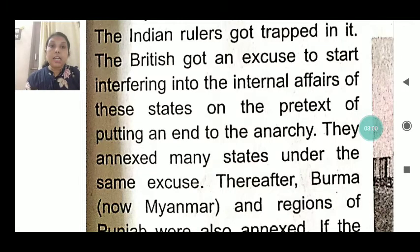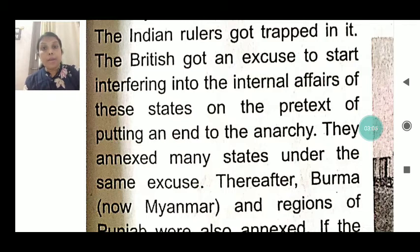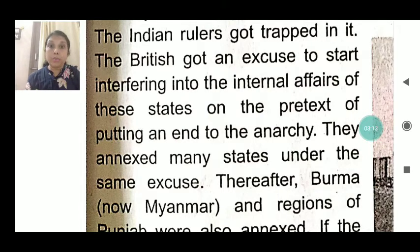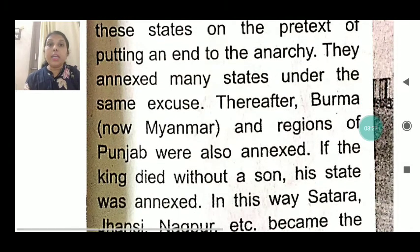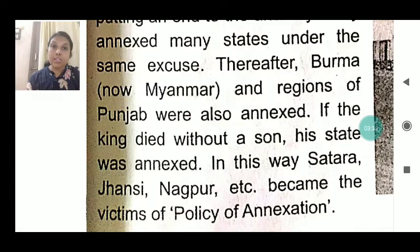The British annexed many states under the same excuses, saying that Indian kings were not capable of looking after their administration and that their interference was necessary. Then Burma — now Myanmar — and the regions of Punjab were also annexed. If a king died without a son, his state was annexed. In this way, Satara, Jhansi, Nagpur and others became victims of the policy of annexation.